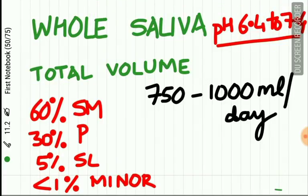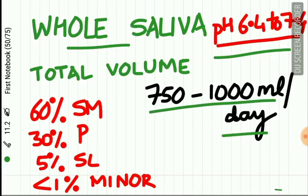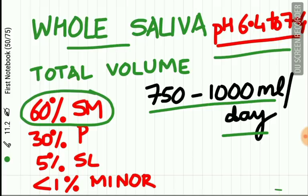Whole saliva is the mixture of saliva from all major and minor salivary glands. Its pH is between 6.4 and 7.4. The total daily volume is 750 to 1000 ml. The submandibular gland contributes 60%, the parotid 30%, the sublingual 5%, and minor salivary glands less than 1%.